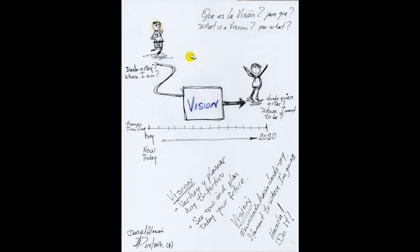But the vision reflects, first of all, where I am. I need to know where I am now, today. And the vision will guide me to where I want to be in the future. In the long term that should be between two or four years. Not so much. Not a year because a year is a short term.